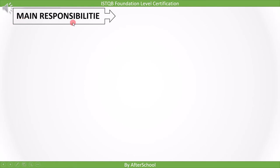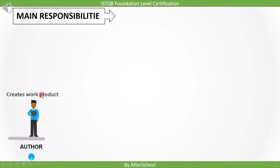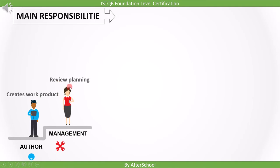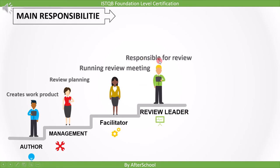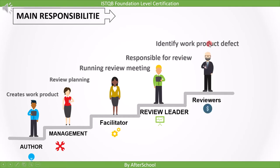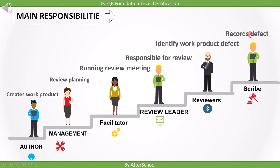Now let's see the main responsibility of each of these people. Author is the person who creates the work product which undergoes the review process. Management is responsible for planning the review process. The role of facilitator is to run the review meeting smoothly. Review leader is responsible for the overall review process. Reviewer is the person who reviews the work product to find defects. Author creates the work product and reviewer reviews the work product. And scribe records the defects found by the reviewer.